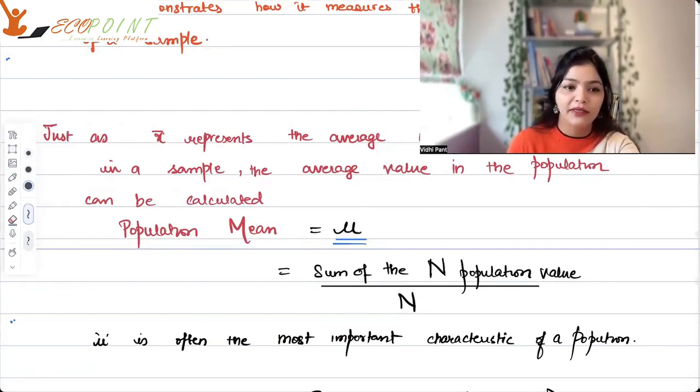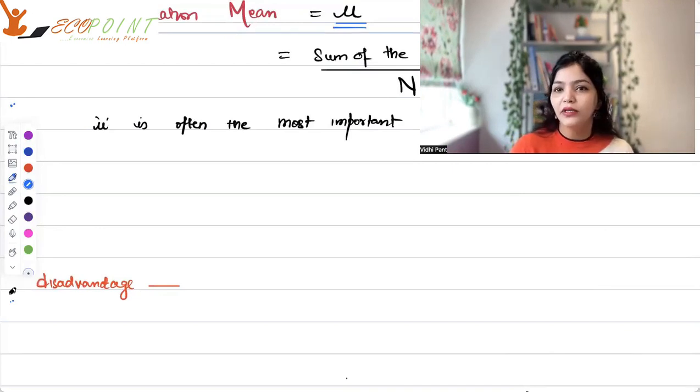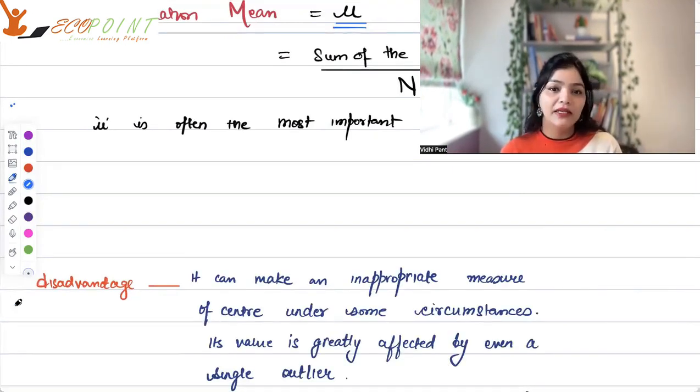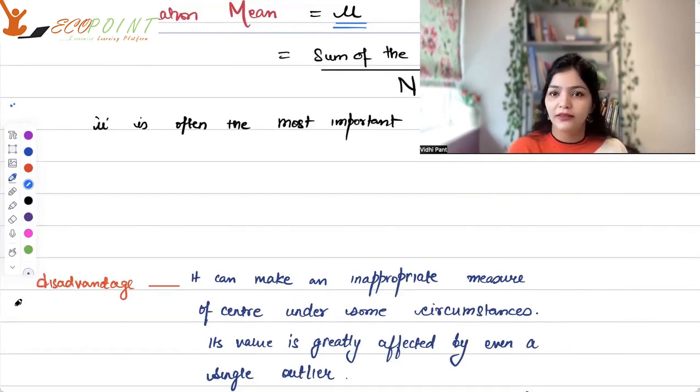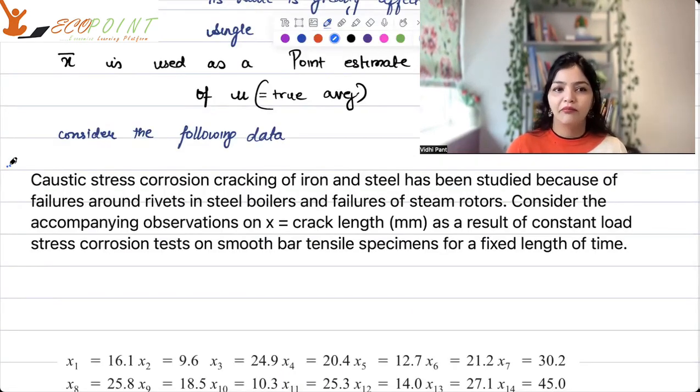Sometimes, you know, in your data set, you might have some outliers. It can make an inappropriate measure of center under some circumstances. What are those circumstances, especially when you know you have outliers in your data set. Now, what do I mean by that? Let's take an example here.